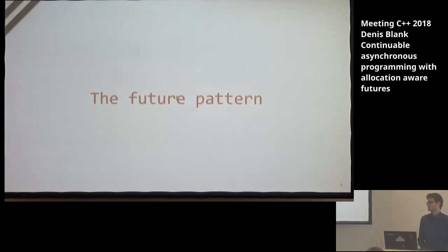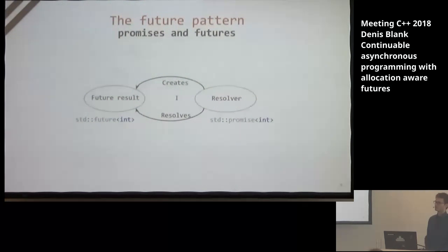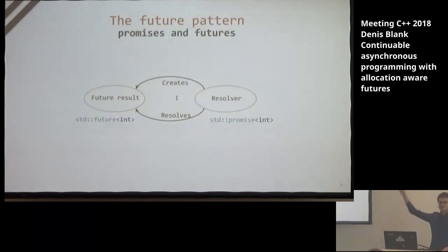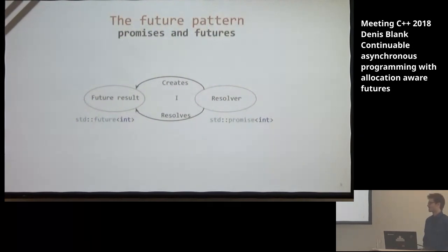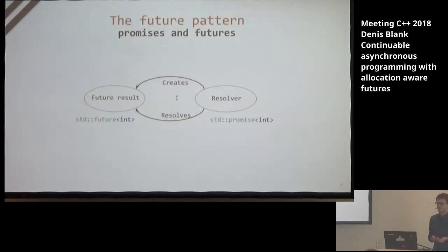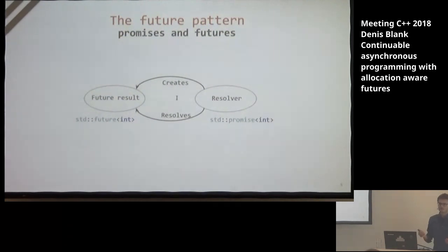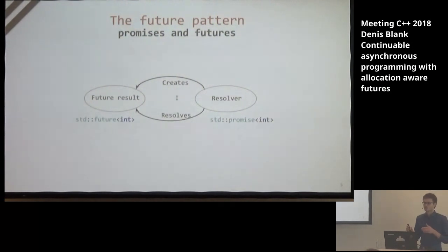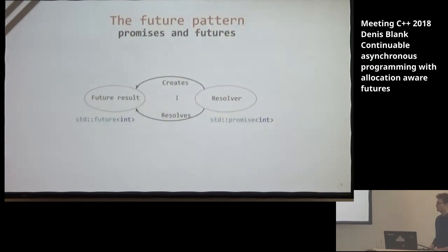First, the future pattern. Probably everybody has seen this before. Usually the future can be used to express the result of an asynchronous operation. The asynchronous operation can finish with a result or not — if not, then the result will be void. We need some primitive we can use to immediately work with the value which will be produced in the future. For that we have std::future, and to resolve it we have the promise.